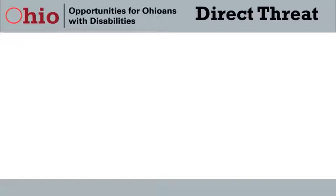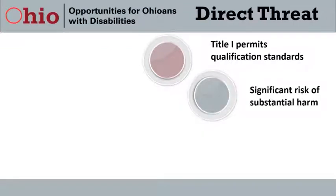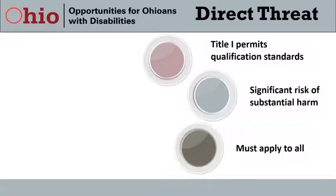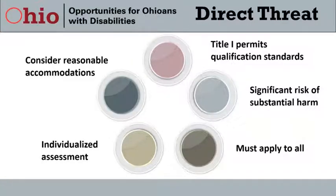Title I permits employers to create qualification standards that require individuals not to pose a direct threat to health or safety. A direct threat is a significant risk of substantial harm to the health or safety of the individual or others that cannot be eliminated or reduced by reasonable accommodation. There are two important aspects of direct threat: the standard must apply to all individuals in the same job class, and making the determination requires an individualized assessment using the EEOC's criteria. A key part of the assessment is the requirement to consider whether a reasonable accommodation is available to eliminate or reduce the direct threat.